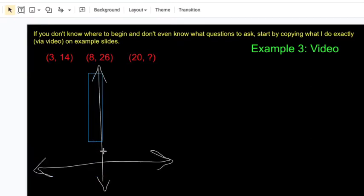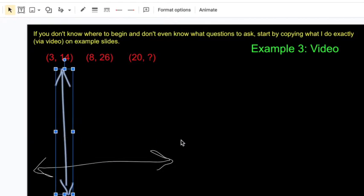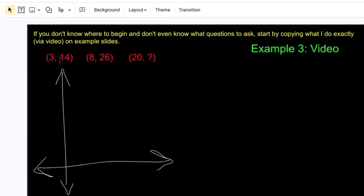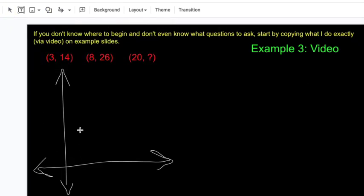Let me shift this way over because we're all up in the positive territory. So forward 3, up 14, might be around here.